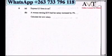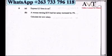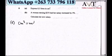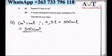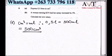Number 8a: convert 0.5 liters to cubic centimeters. Since cubic centimeters equal milliliters, we find how many milliliters are in 0.5 liters: that is 500 milliliters, therefore 500 cubic centimeters.